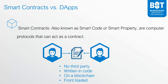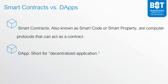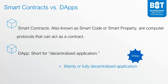Now let's move to a dApp. A dApp — both pronunciations are used, some people say 'dApp' like email, some say 'dApps' — is short for decentralized application. It is an application that is mainly or fully decentralized. When you use an application, you're not just using a contract; you are using a full application — like a web application that you engage with, where you put in some information and get some sort of return.